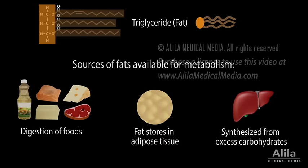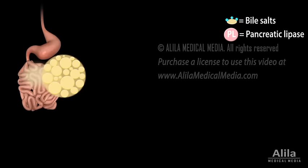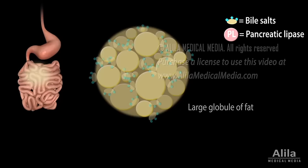Dietary fats are digested mainly in the small intestine by the action of bile salts and pancreatic lipase. Bile salts emulsify fats, acting as a detergent, breaking large globules of fat into smaller micelles, making them more accessible to lipase.